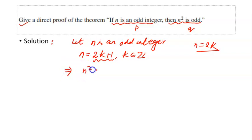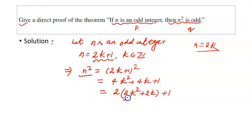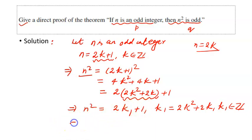Now we compute n squared. n squared equals (2k + 1)² = 4k² + 4k + 1, which can also be written as 2(2k² + 2k) + 1. So we are able to write n squared as twice of something plus 1. We can write n² = 2k₁ + 1, where k₁ = 2k² + 2k. Since k is an integer, 2k² + 2k is also an integer, so k₁ belongs to ℤ. Therefore n squared can be written as 2k₁ + 1, which implies that n squared is an odd integer.